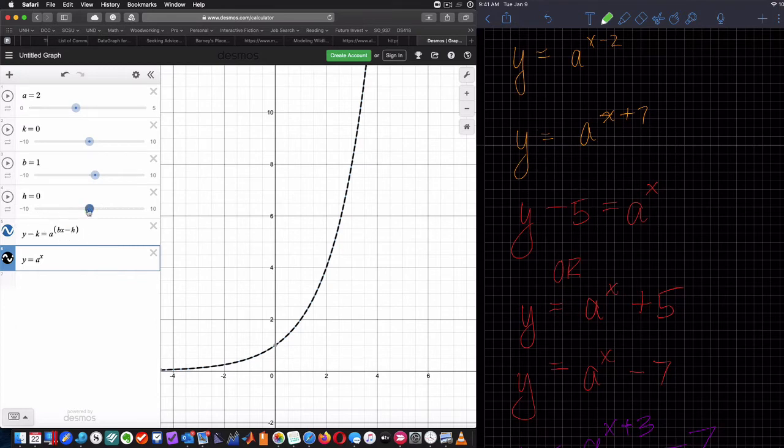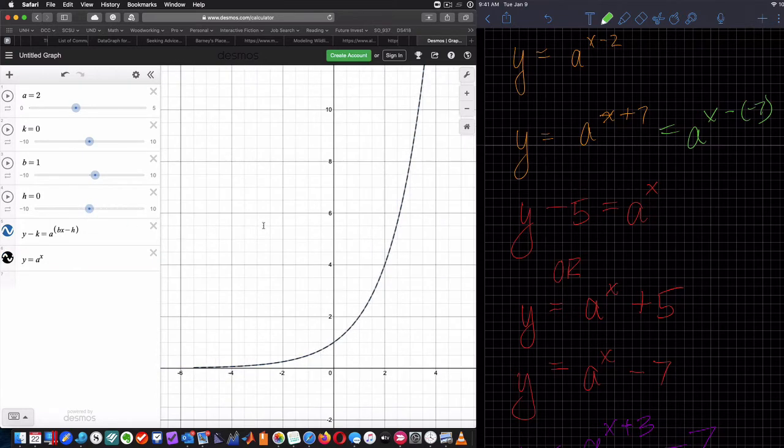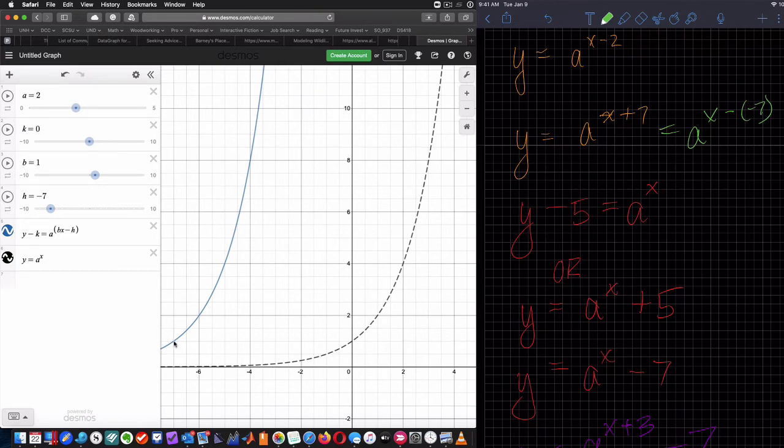So now I said, Y equals A to the X plus seven. So A to the X plus seven is equal to A to the X minus negative seven. So what is the value of H? The value of H is negative seven. That represents a shift to the left seven units. And there we are shifted to the left seven units. And I'm going through negative seven comma one, instead of zero comma one, because I changed my X value, shifted it left seven units. So instead of it being at zero, it's going to be at X equals negative seven.